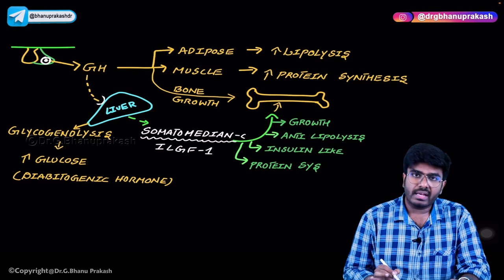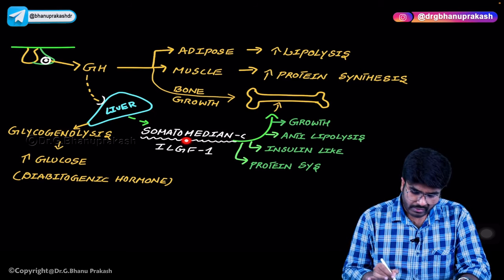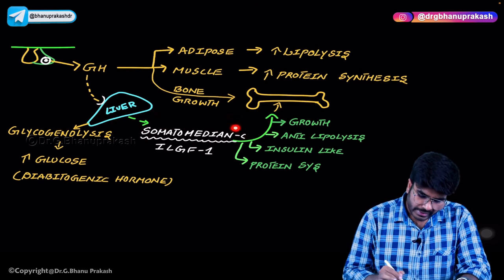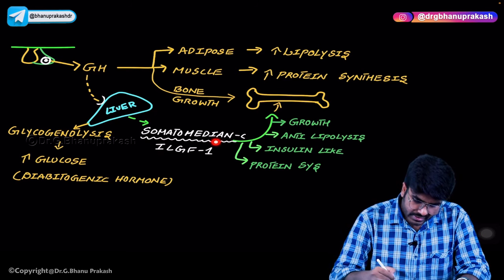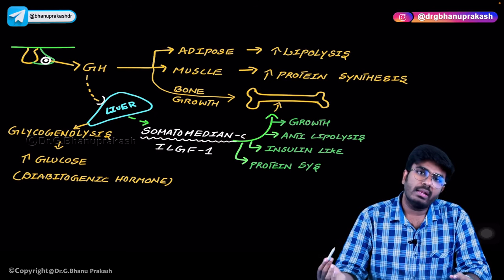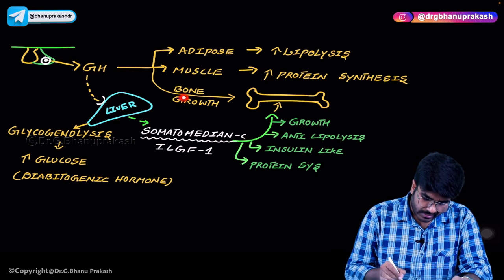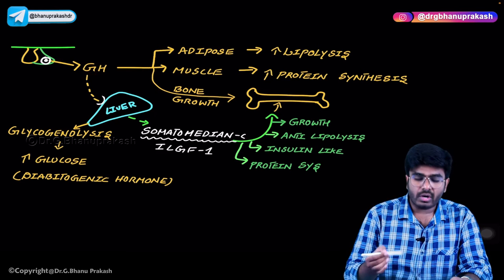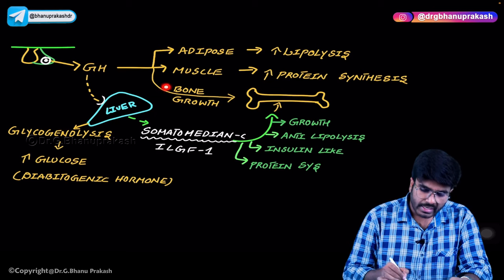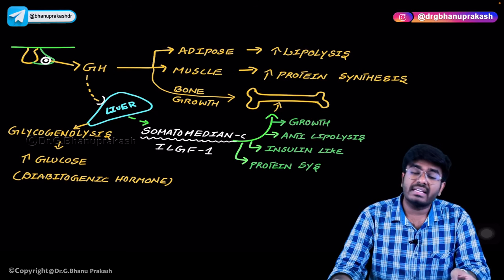Growth hormone also goes to the liver where it is converted into somatomedin C, also known as insulin-like growth factor (IGF). Somatomedin C acts on bone to increase bone length and height — this is the indirect pathway. The direct action is growth hormone acting on bone itself; the indirect action is via conversion to somatomedin C. Both direct and indirect actions contribute to bone growth. Importantly, somatomedin C also causes protein synthesis, just like the direct action.